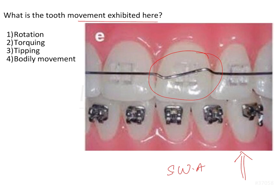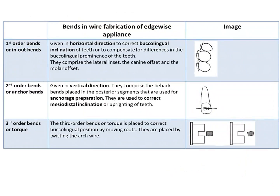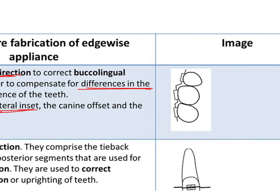There are different types of bends: first order, second order, and third order bends. First order bends are also known as in-out bends because they were given to compensate for the buccolingual prominences of certain teeth. For example, the lateral incisor is slightly lingually placed compared to the canine and central incisor, so their buccal surfaces are slightly more prominent — this is known as the lateral inset. These horizontal bends were given to compensate for these buccolingual differences, running from buccal to lingual direction.